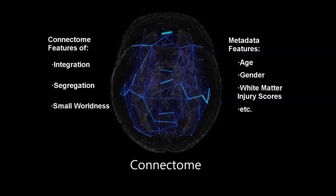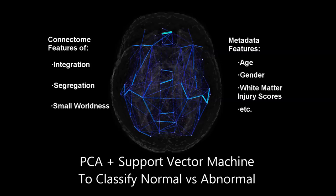For each scan, all features were collected in a single feature vector. After reducing the dimensionality of this feature vector via principal component analysis, a support vector machine was used to discriminate between normal and abnormal motor scores.